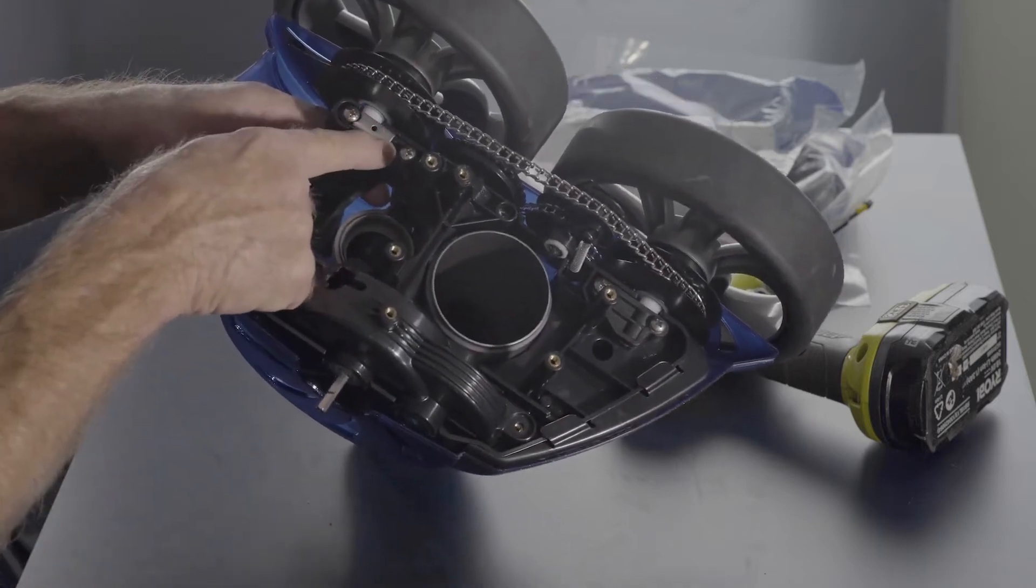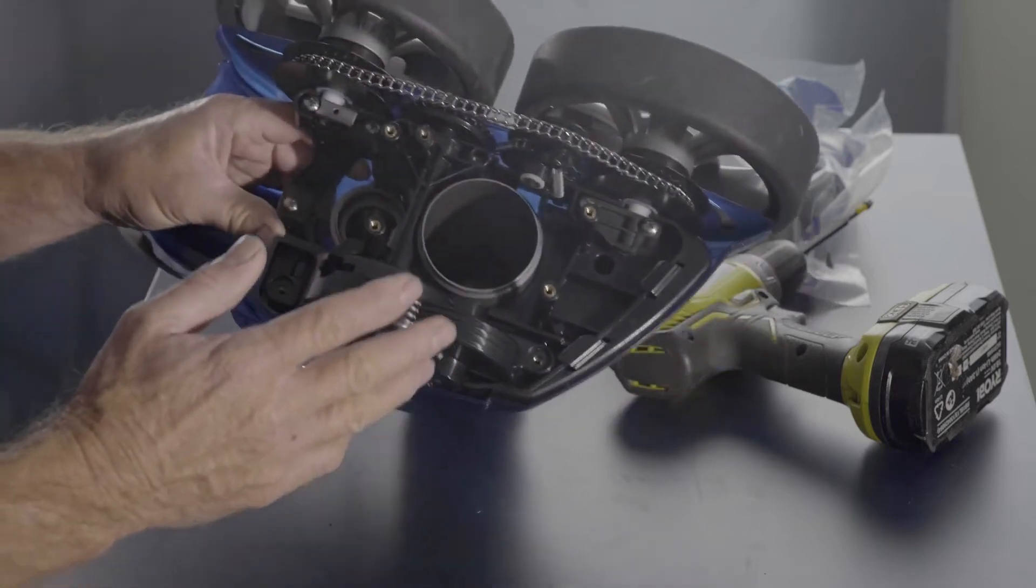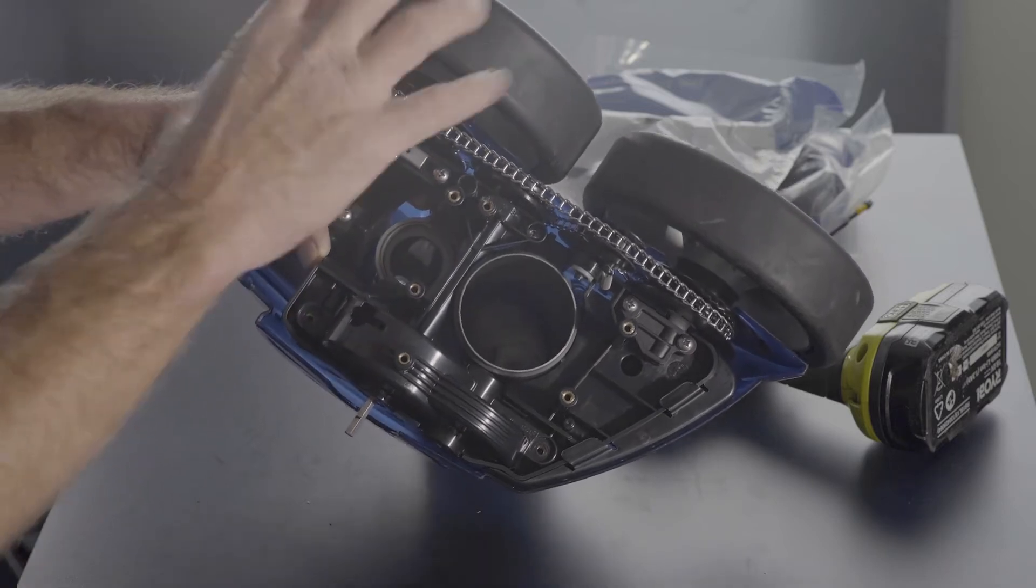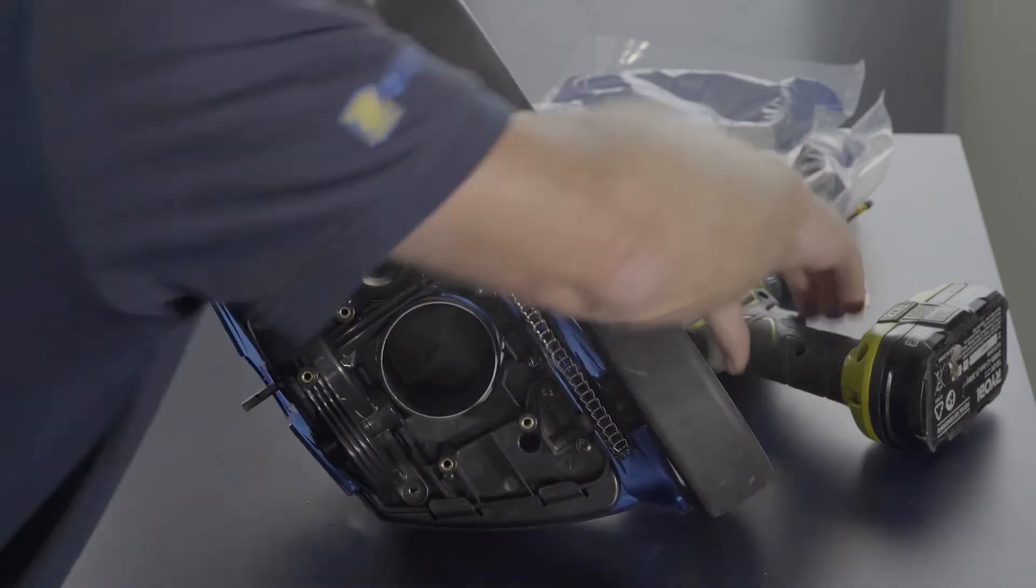You might have to replace that axle, which is very simple. It's just undoing these two screws and that whole section comes out and you just do the chain. I can show you.